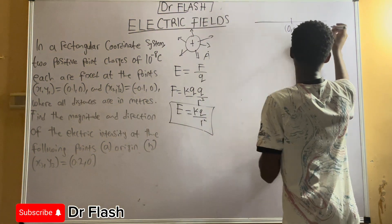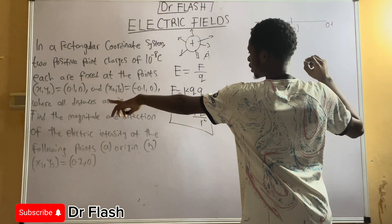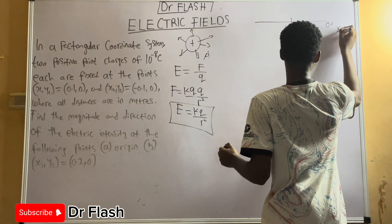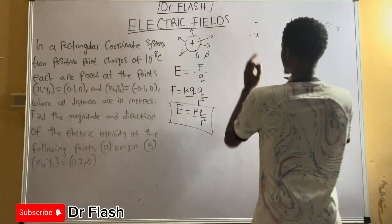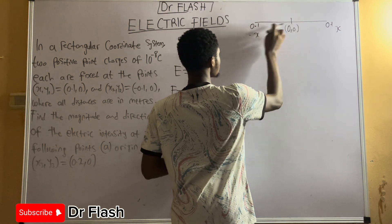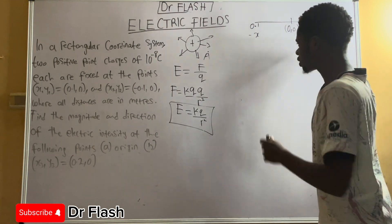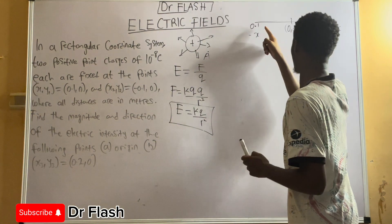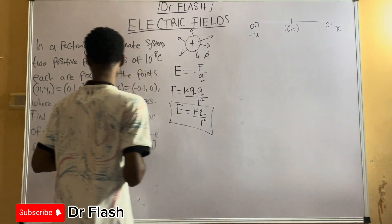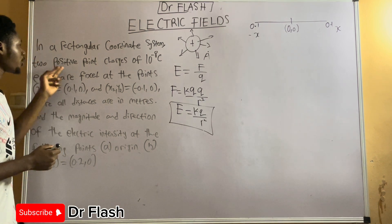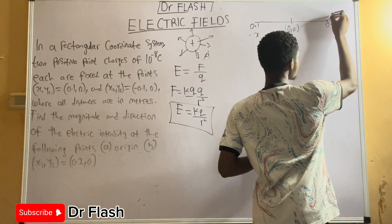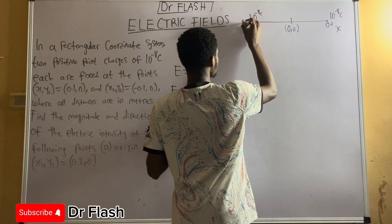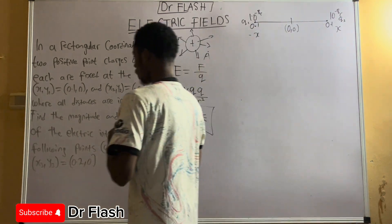The first charge is at (0.1, 0), so from the origin to there is 0.1 meters — it lies on the x-axis. The second charge is at (−0.1, 0), on the negative x-axis side, also 0.1 meters from the origin. Both fall on the same straight line because the y-values are zero. We place the two positive point charges of 10⁻⁸ coulombs each — I'll call them Q1 and Q2.